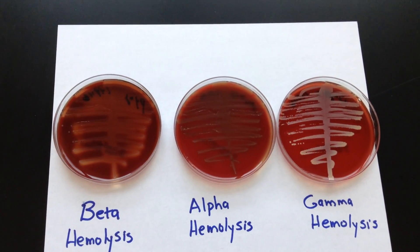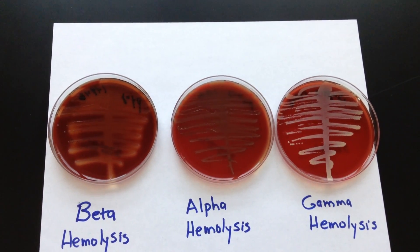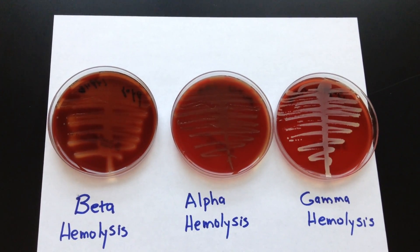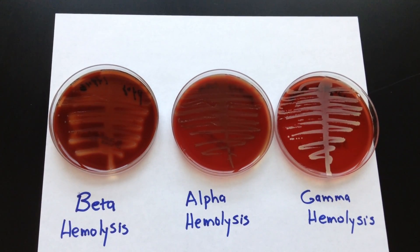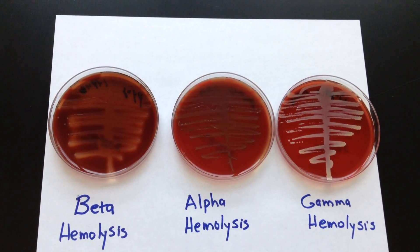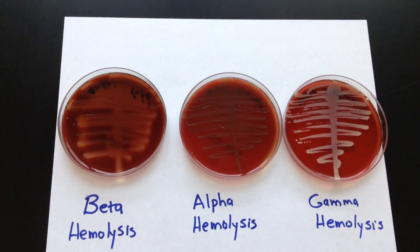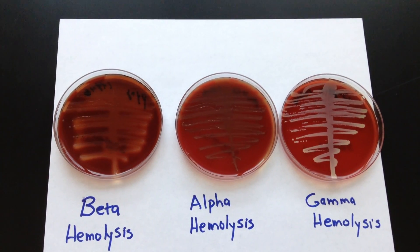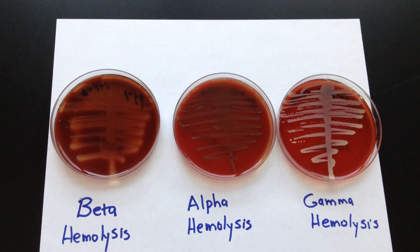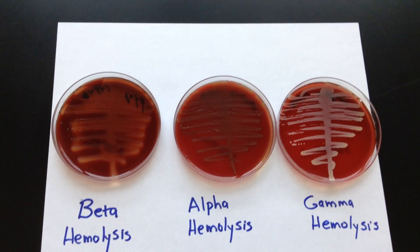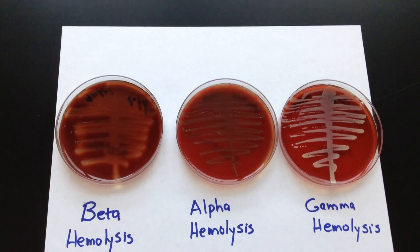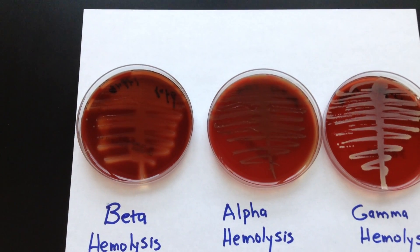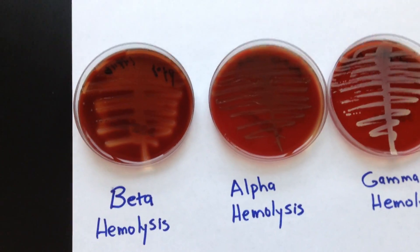There's a set of enzymes called hemolysins — 'hemo' meaning blood, 'lysins' referring to the fact that they break apart blood. If the organism has hemolysins, it can actually start to digest or break down the blood. If the organism lacks the hemolysins, it has a different appearance on the plate. Let's go through those different reactions.